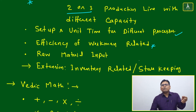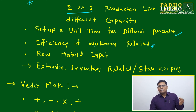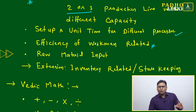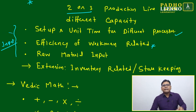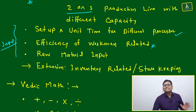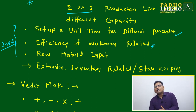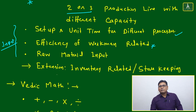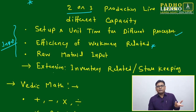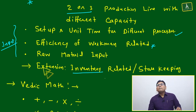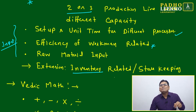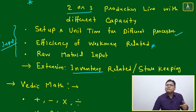Other factors that can extend the caselet include efficiency of workmen — mixing this variable into the same caselet extends the question significantly. Also, raw material input and overall input-side variables: so far we have considered only output-side data and not a single input variable. Combining one or two input-side variables with one or two output-side variables makes questions more difficult.